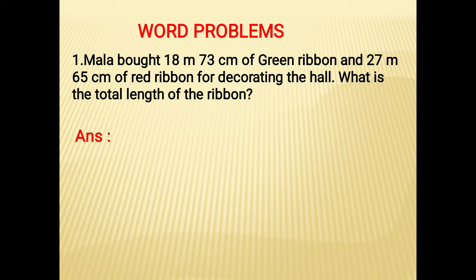Now see the solution. First statement is length of the green ribbon, then length of the red ribbon. We are going to add them. Before that, write down the unit - that is meter and centimeter. Now place the value: 18m 73cm.